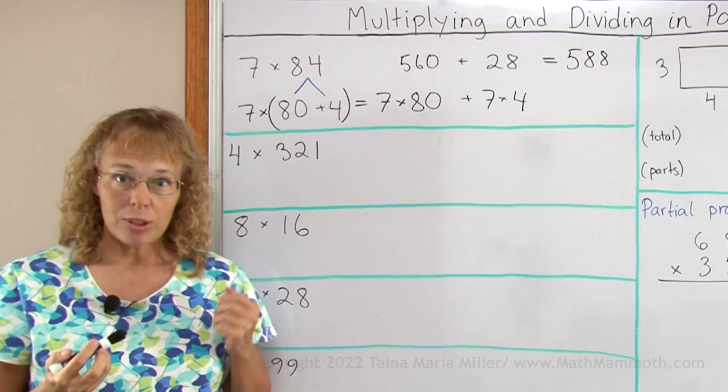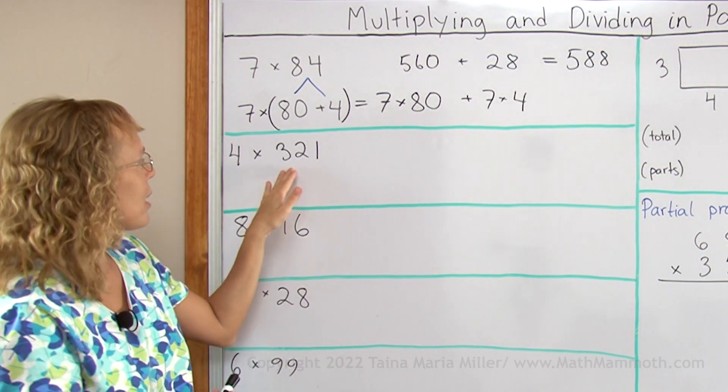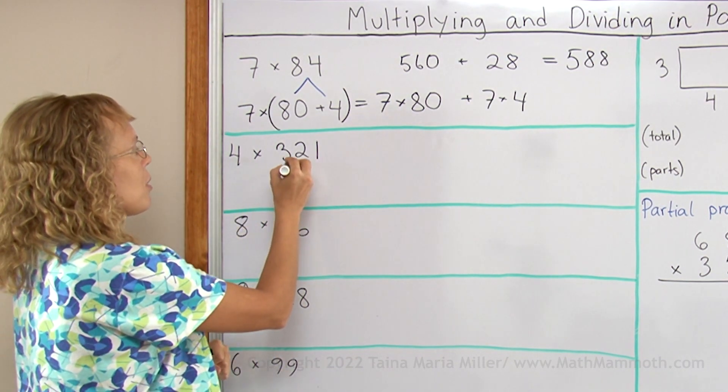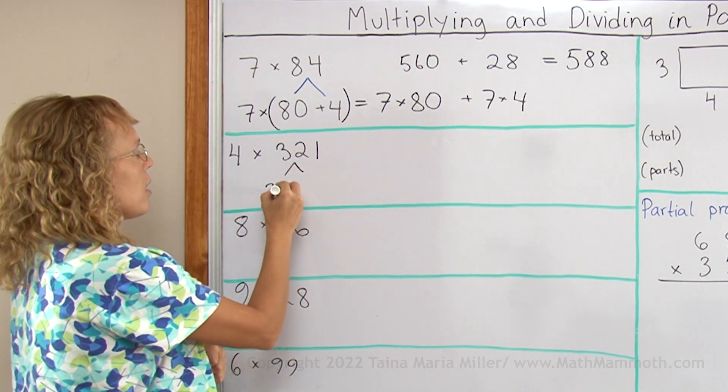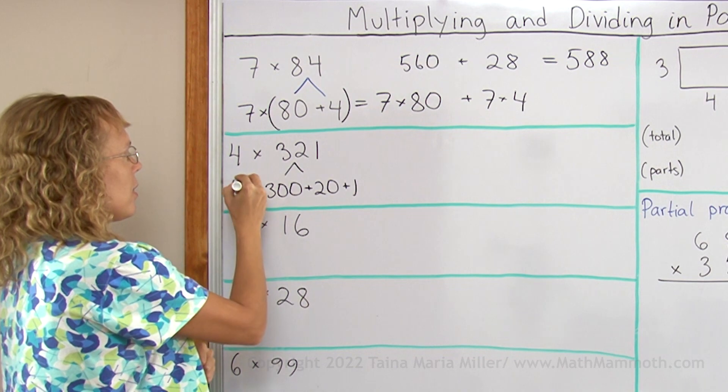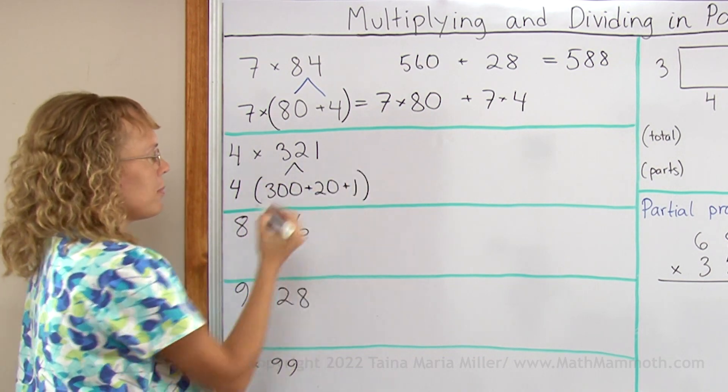This same process works even with larger numbers. I can break this into three parts, for example. So this one would be 300 plus 20 plus 1, and then that times 4.